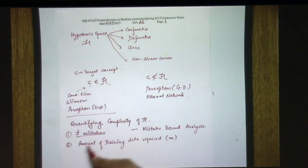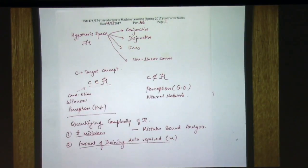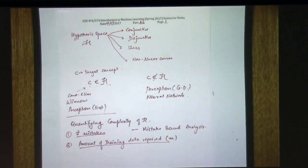We're going to move away from number of mistakes and look at m instead. This is useful because if we can understand the required training data, we can answer questions like: for a neural network, how much training data do I actually need? In your assignment you're using 50,000 training examples — but could we have done the same with 20,000, or 10,000? That depends on the complexity of the hypothesis space.